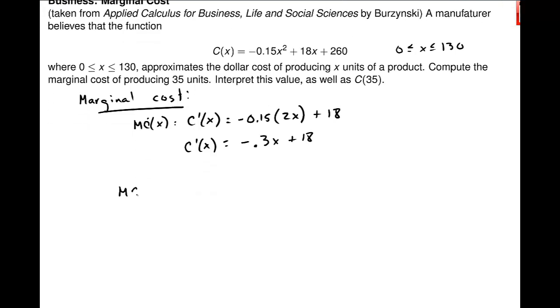And I want to find that when I'm producing 35 units. So marginal cost at 35 is C prime of 35, and so I'll plug that in. So let's say, and I get 7.5.